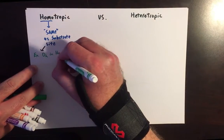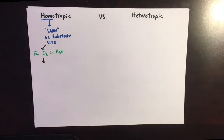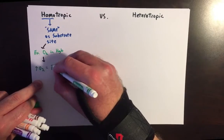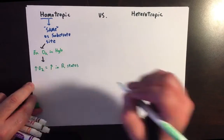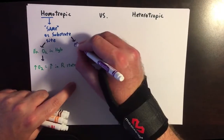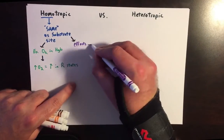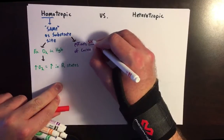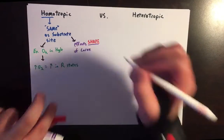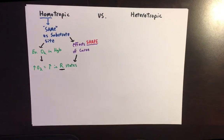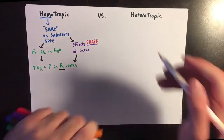For example, oxygen binding in hemoglobin would be a homotrophic effect. The more oxygen you have, the more subunits that are going to be in the R state. If you have more subunits in the R state, the binding curve itself tends to look more R-like — so we're affecting the shape of the curve by inducing those R-state changes.